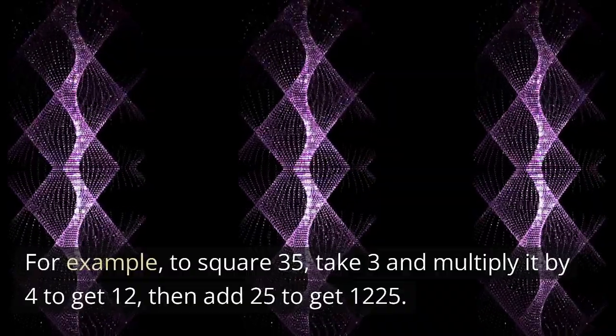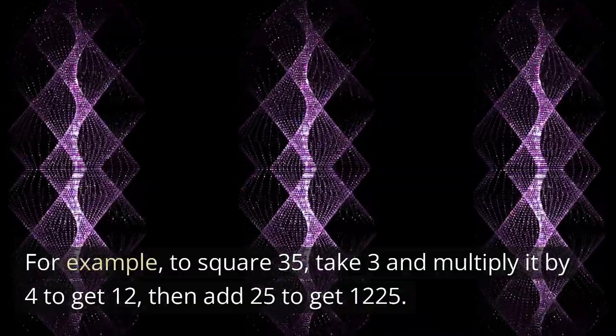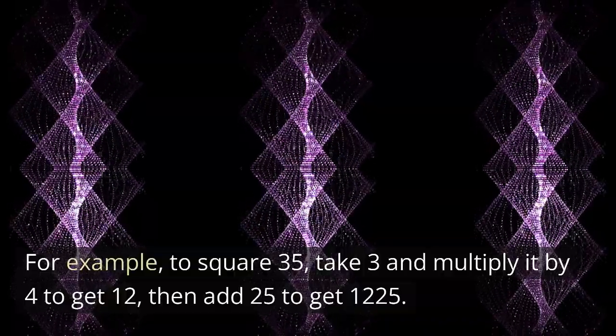For example, to square 35, take 3 and multiply it by 4 to get 12, then add 25 to get 1225.